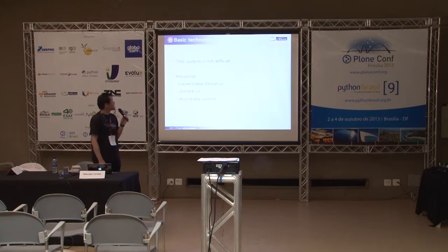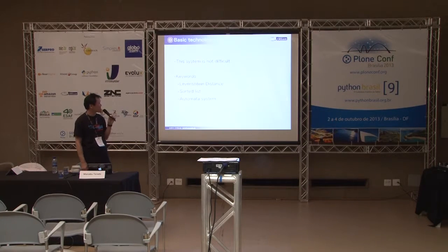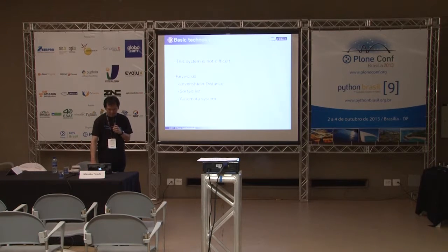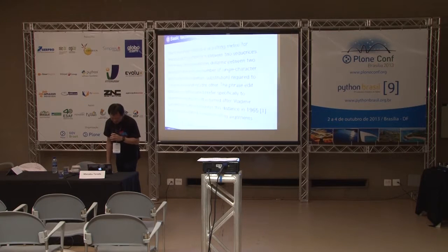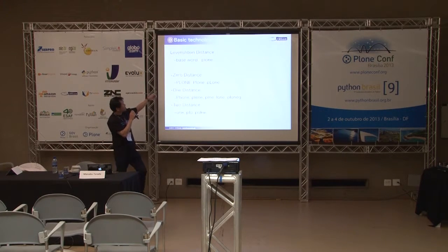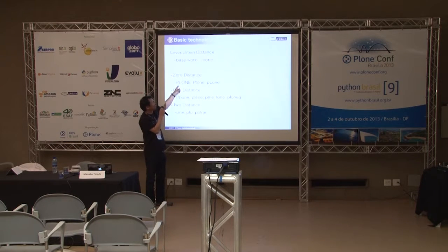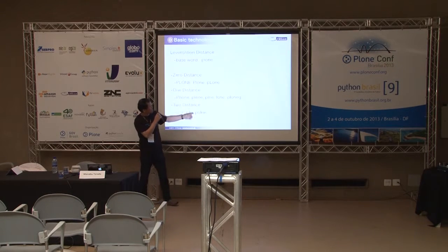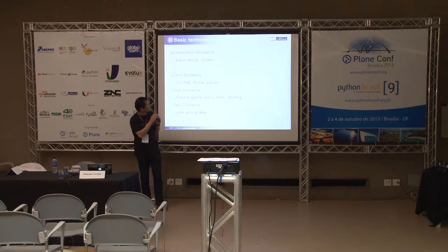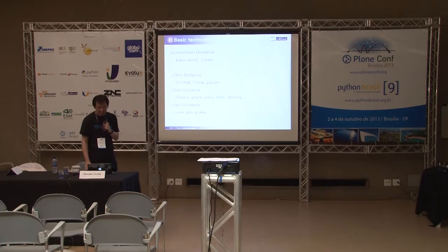So basic technologies. This system is not difficult. The key words are only three: Levenshtein distance, sorted list, and automata system. Levenshtein distance is a string metric from Wikipedia. The example is easy: the base word is Plone. Zero distance is Plone with uppercase or different case. One distance is phone or other close words. Two distance is P-L-O — that is Levenshtein distance.